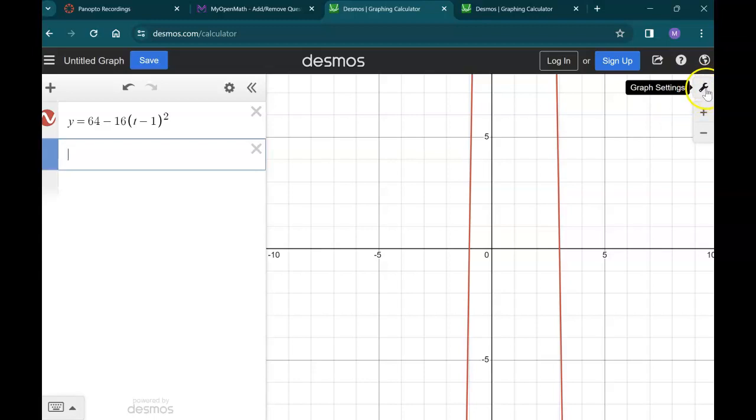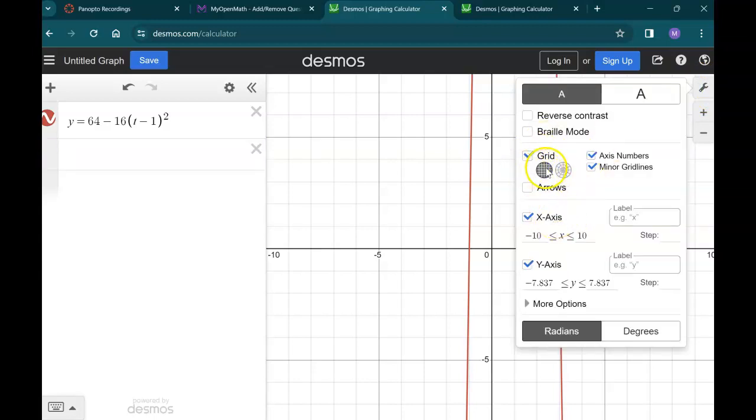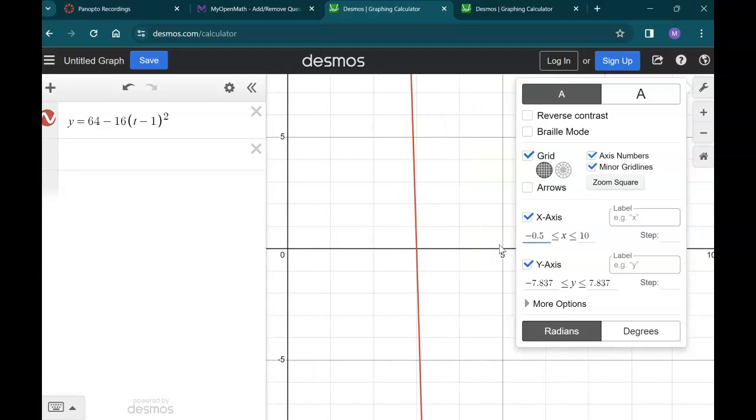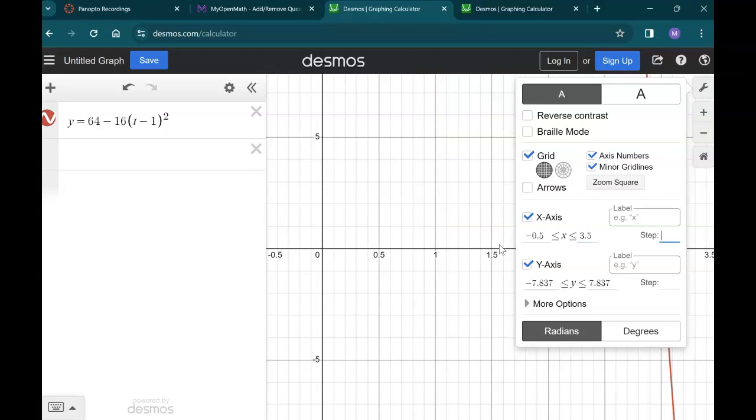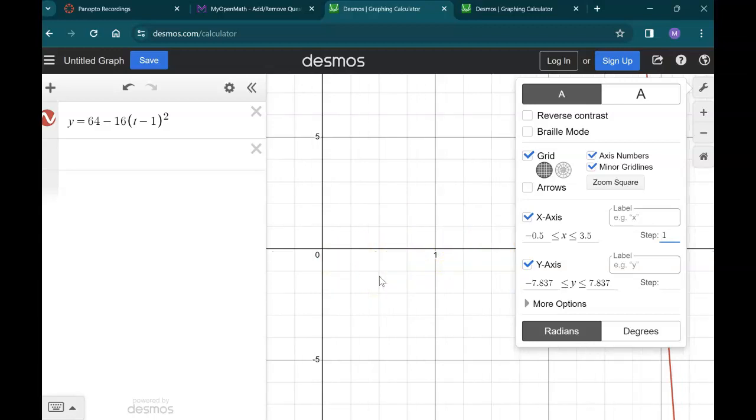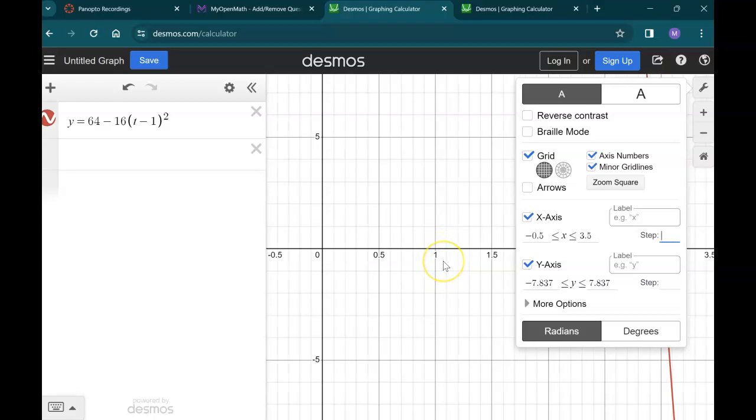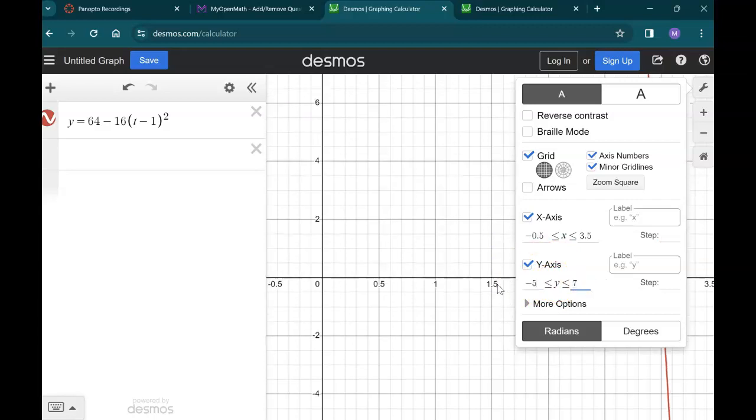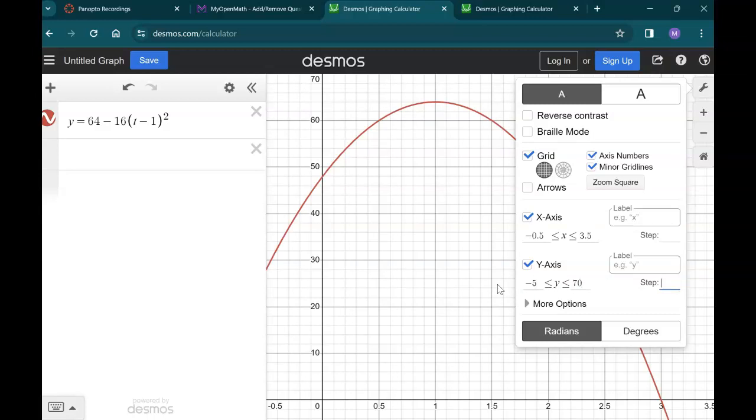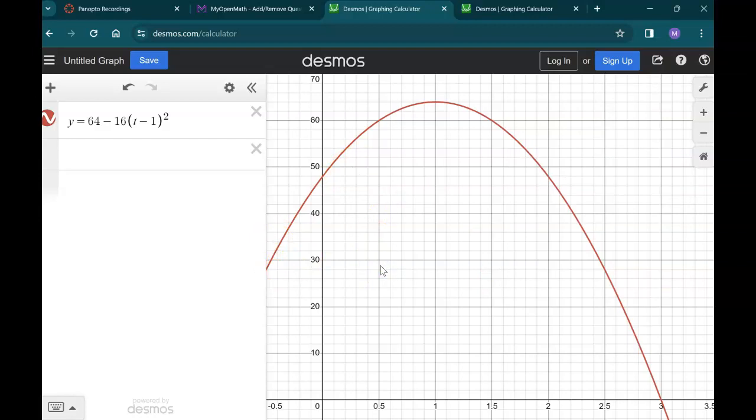I'm going to go over here to graph settings. And in that, you can set your window. You can turn grids and grid lines off and on. Our window was 0 to 3. I'm going to go a little further than that just so that everything's easy to see in my window here. So I'm going to go -0.5 to 3.5. For the y-axis, it was 0 to 64. I'm going to go -5 to 70. So now we're looking at pretty much what was on the first part of this example.